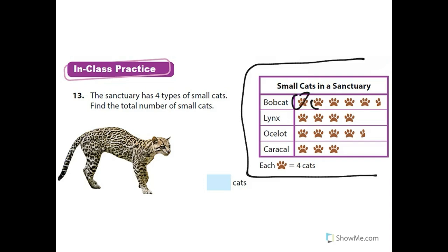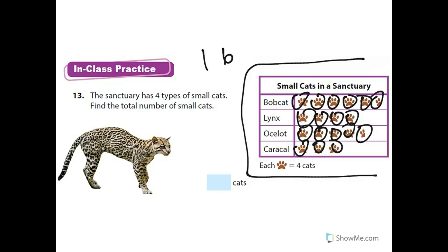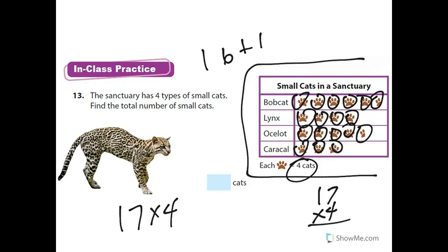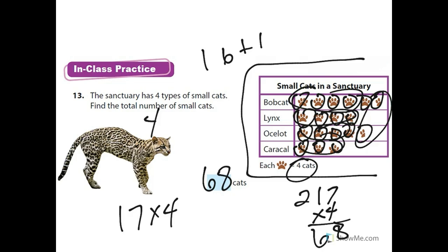I counted up the paws: there are 16 whole paws and two half-paws, which make one whole, giving 17. Then 17 times 4: four times seven is 28, four times one is four, plus two is 68. There are 68 small cats. I'm basically distributing the four across all paw counts and then adding.